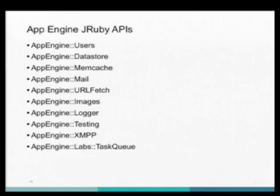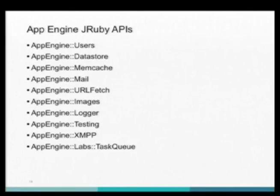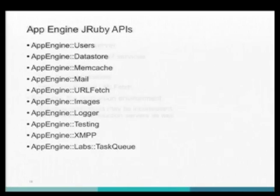There's a Logger API — for Rails, for example, you'd send your logs there instead of trying to write to disk, since in App Engine production you can't write to disk. There's also a Testing API, an XMPP service, and a Task Queue.